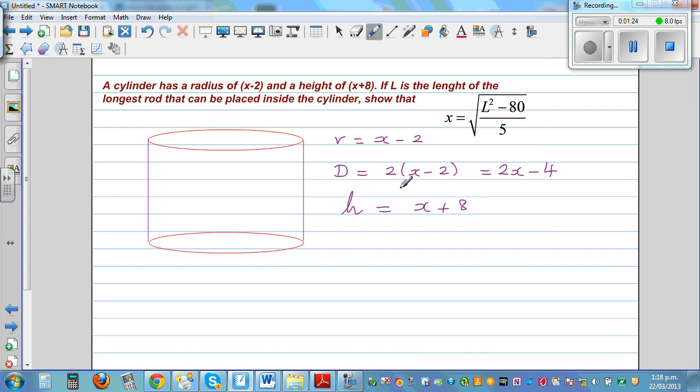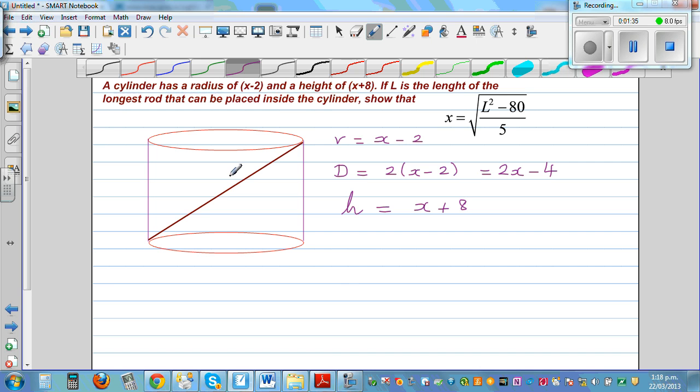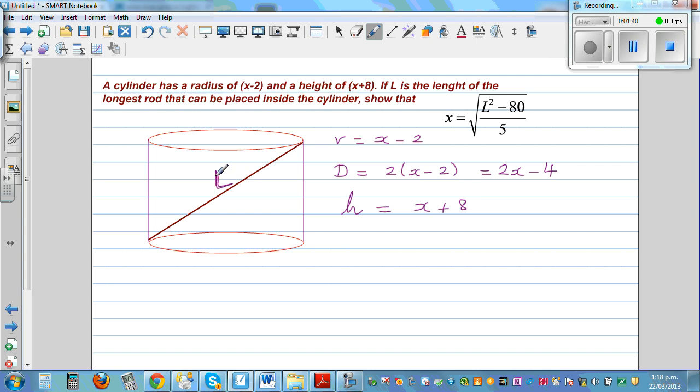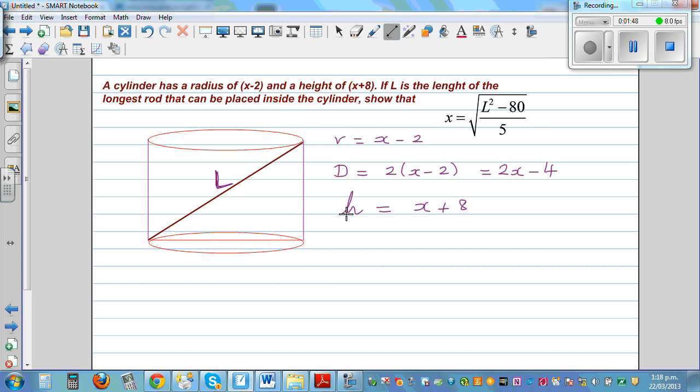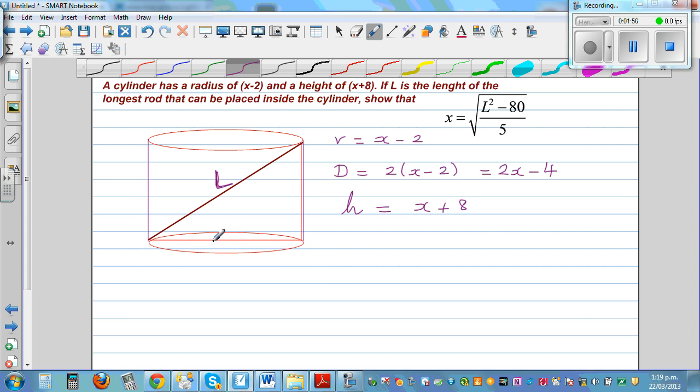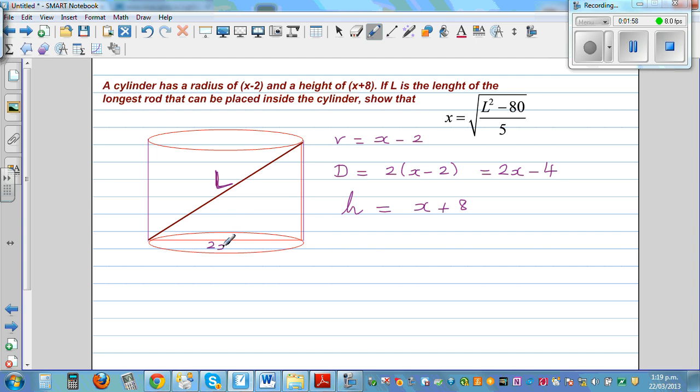Okay, now the longest rod that can be placed would be a rod that you can place like this. This is the longest rod that you can place. Say this has got a length of L. So what is this distance? And what is this distance? Well, this is the diameter, so this is 2x minus 4. And the height is x plus 8.